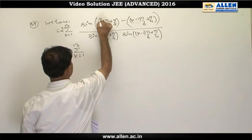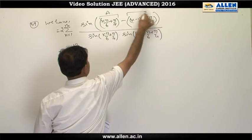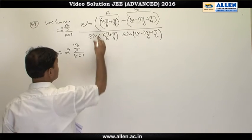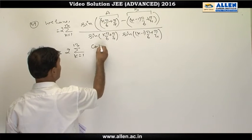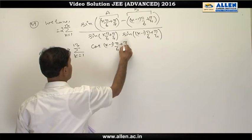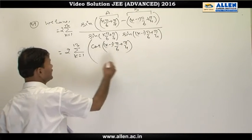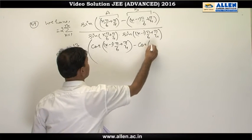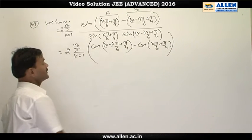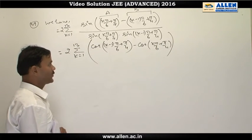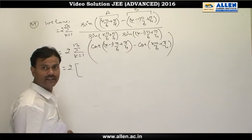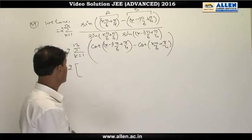Letting angle A = k·π/6 + π/4 and angle B = (k−1)·π/6 + π/4, and applying sin(A−B) = sin A cos B − cos A sin B, the general term becomes cot((k−1)·π/6 + π/4) minus cot(k·π/6 + π/4). This is a telescoping difference of two cotangent terms.